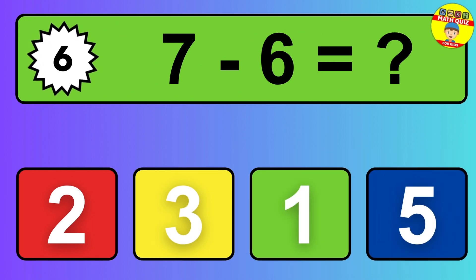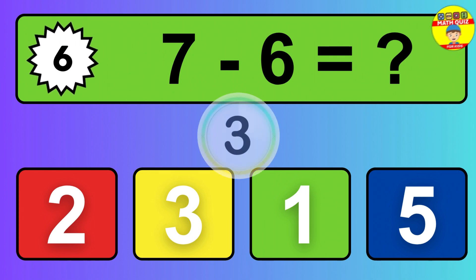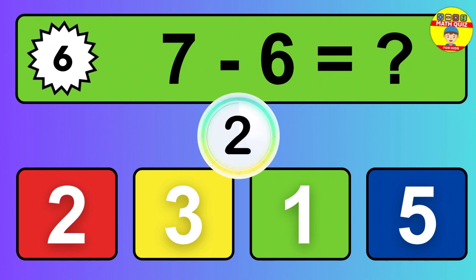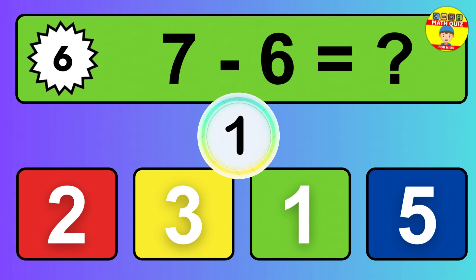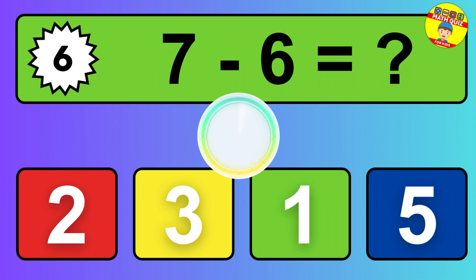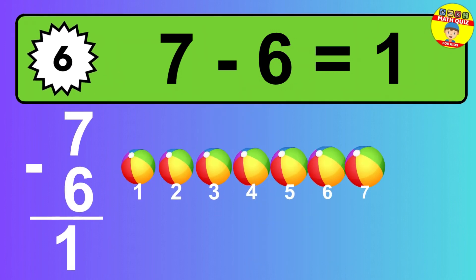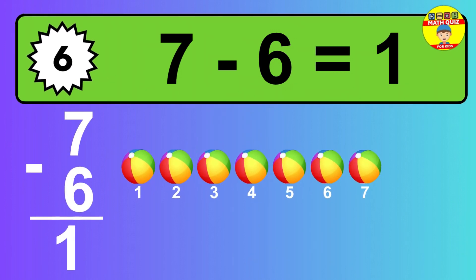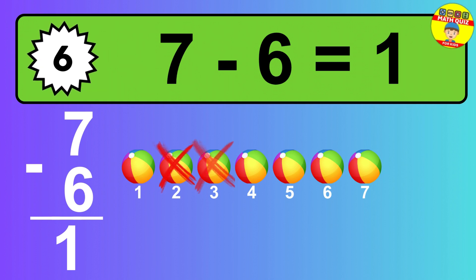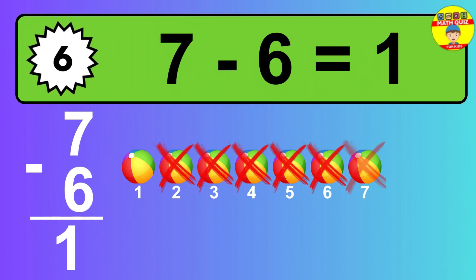Question 6. 7 minus 6 equals what? The answer is 7 minus 6 is 1. Let's count it. 1.